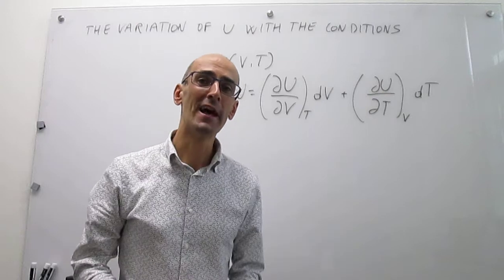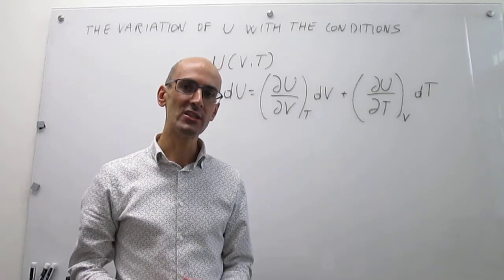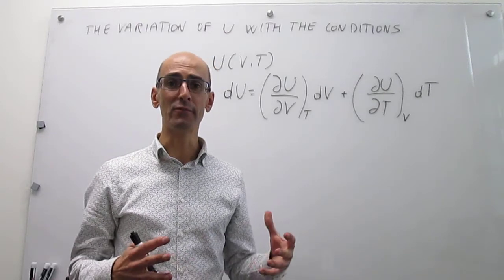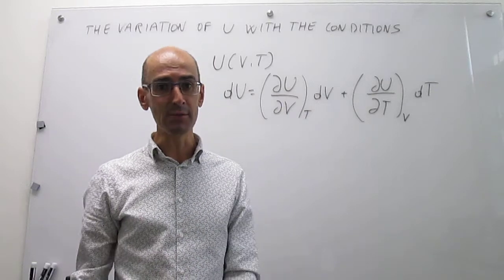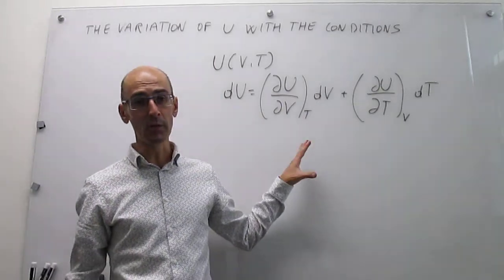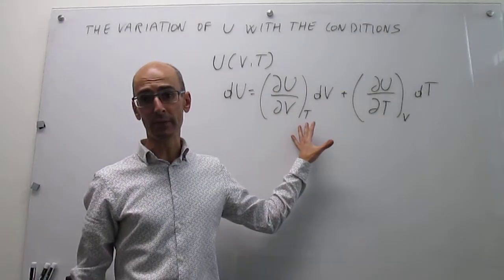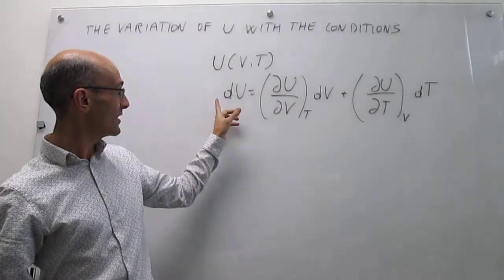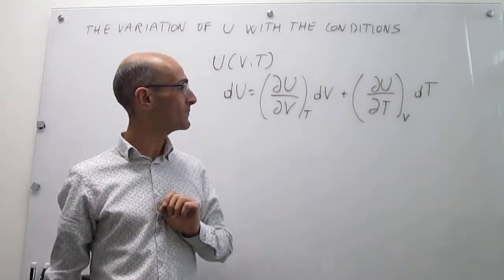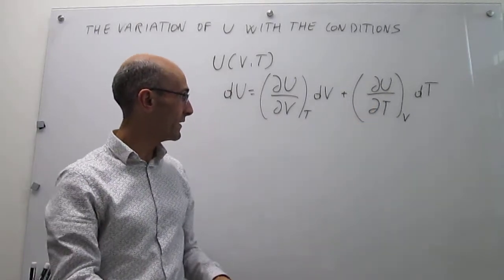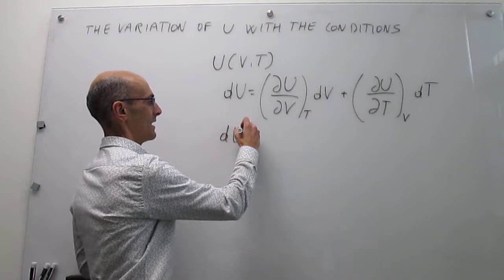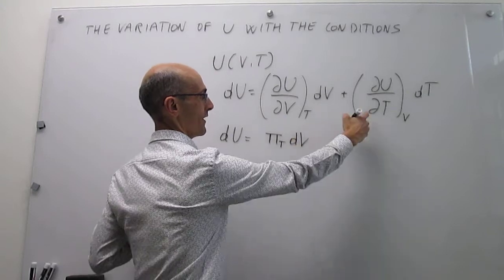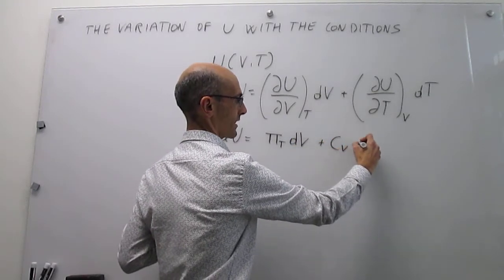In this video, we are going to learn how the internal energy changes with temperature at constant pressure. This video follows on an explanation for the variation of internal energy with volume and temperature, which we have done in a prior video. Here's the wrap-up of that variation: you can study it by taking total derivatives of internal energy with respect to volume and temperature. This gives us an expression involving what we call the internal pressure, and that first derivative is just the heat capacity at constant temperature.